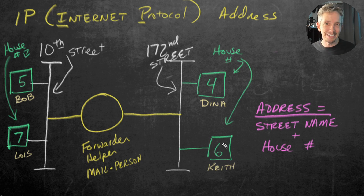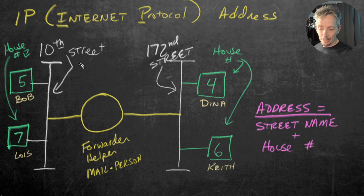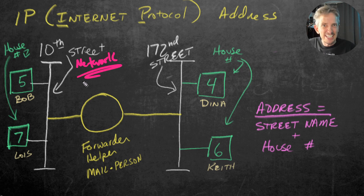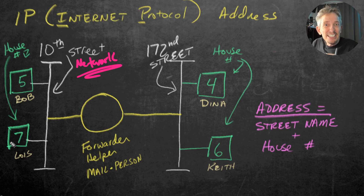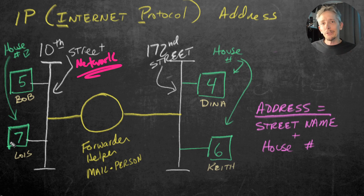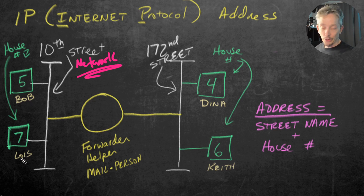The reason that's important is because that's how IP addresses work in computer networks today. In IP networks, we have street names — except instead of calling them street names, we call them networks, sometimes referred to as a network ID. Individual devices on those networks — printers, Macs, Linux, Windows machines — each have their own host address. So Bob's computer could be host address five, and Lois's computer host address seven, on the 10 network.